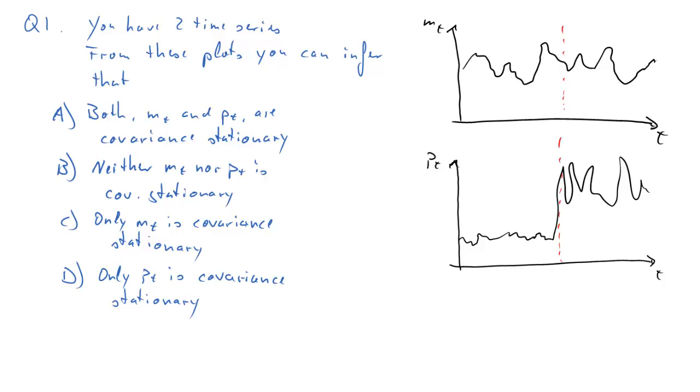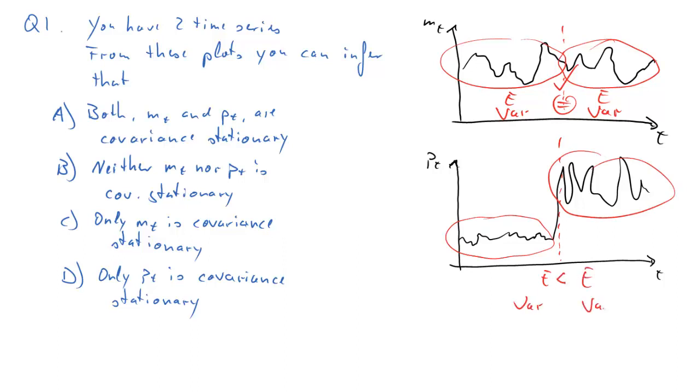Here's the solution. One way we can think about covariance stationarity is to split the sample somewhere, say in the middle. Then look at the two sub-periods we created. Then think about all the characteristics of the time series, like the expected value and the variance. If they are equal in both sub-periods, that means we are possibly having a covariance stationary series. For PT, that is clearly not the case. Whereas for MT, they could well be equal. But for PT, clearly the expected value is smaller in the first sub-period, and the variance is smaller in the first sub-period. So that's not covariance stationary. So B, A is incorrect, C is correct, D is incorrect.